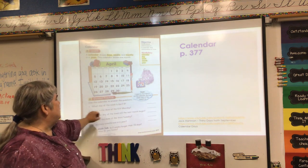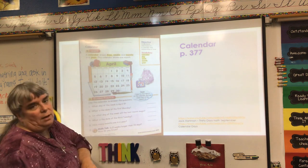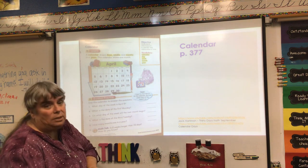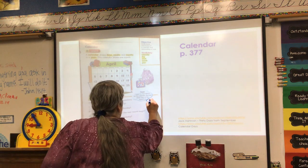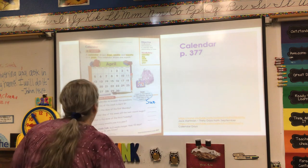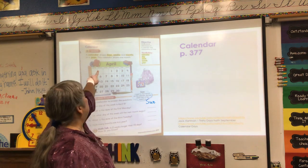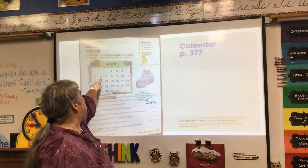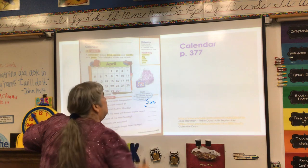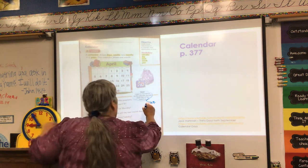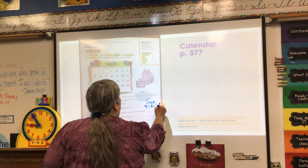Use the calendar to answer these questions. What day of the week is April 5th? We found the 5th, and we noticed that it's the first day of the week, which is a Sunday. I'm just going to put the abbreviation S-U-N. What is the date of the first Monday? We go to Monday up here, go down, and the date is the 6th. So I'm going to say it's 4-6-2020.